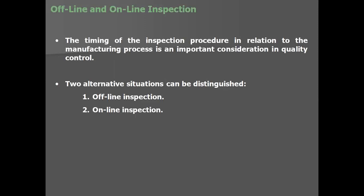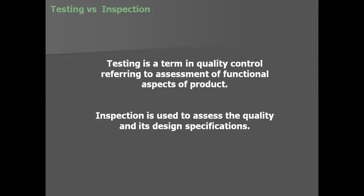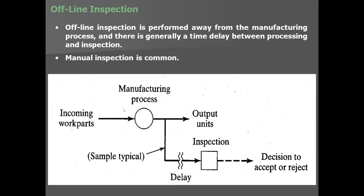Offline and online inspection — the timing of the inspection procedure in relation to the manufacturing process is an important consideration in quality control. There are two alternative situations: offline and online. For offline inspection, the inspection is performed away from the manufacturing process and there is generally a time delay between processing and inspection.